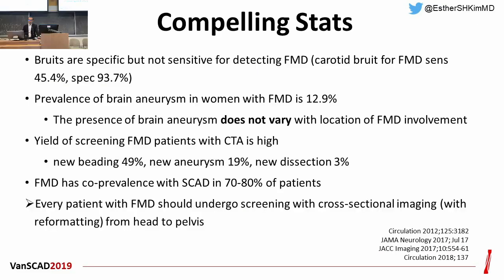I want to summarize the reasons why we need imaging as a screening tool for FMD. Bruit is specific but not sensitive for detecting FMD — the sensitivity of cervical bruit for FMD is less than 50%. That's why we need imaging for detecting FMD. The prevalence of brain aneurysm in patients with FMD is as high as 13%, and this prevalence does not vary with the location of FMD involvement. That is why every patient with FMD should undergo screening with imaging from head to pelvis.